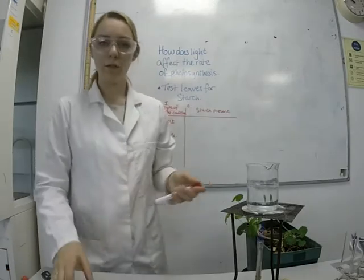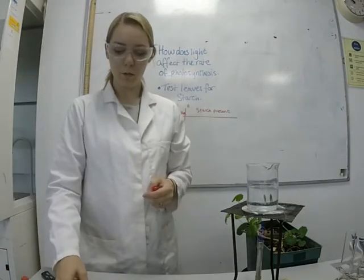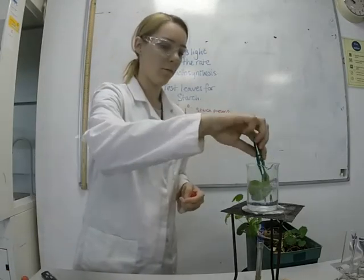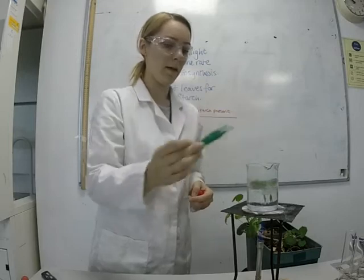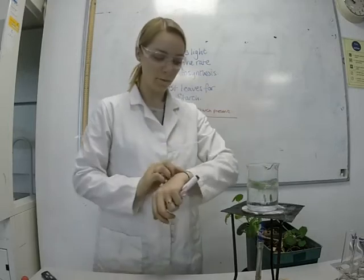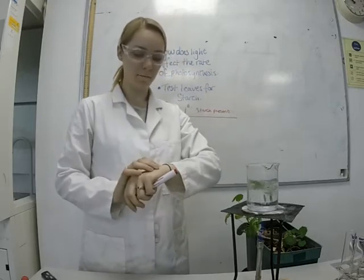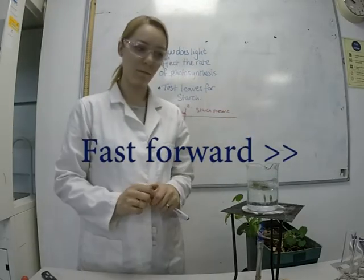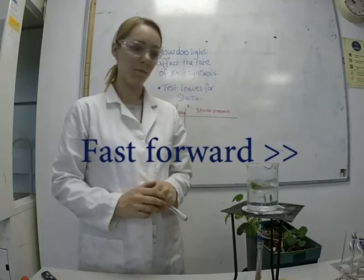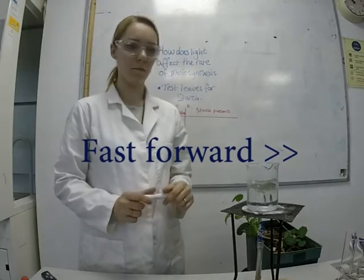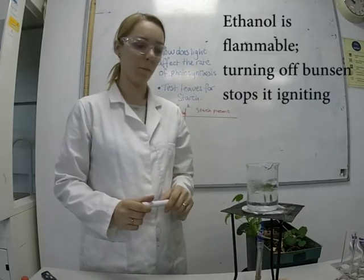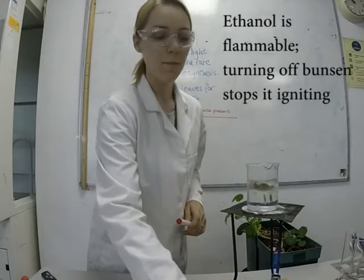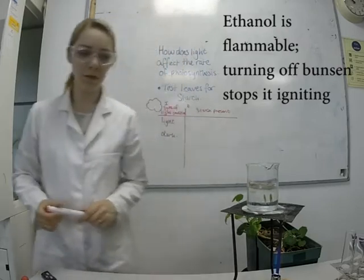The water has now started to boil, so I can add the leaf and time 30 seconds. That's 30 seconds up — I can now turn off the Bunsen.